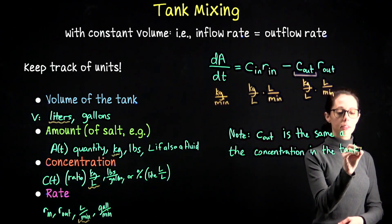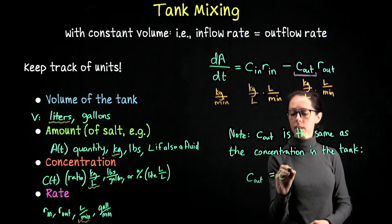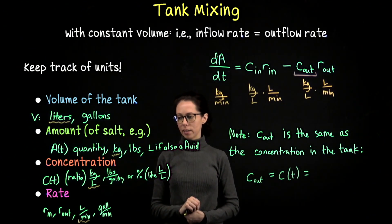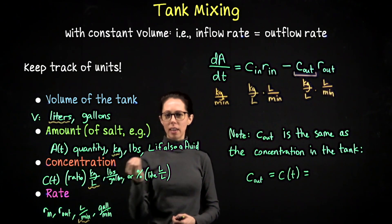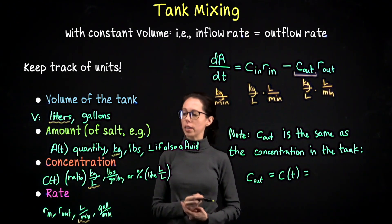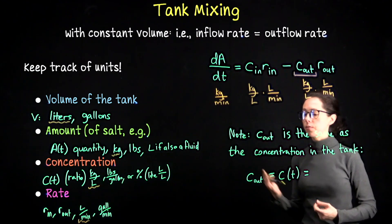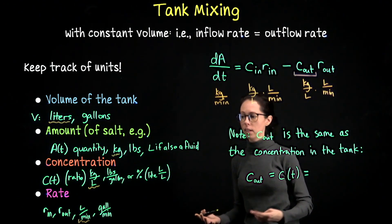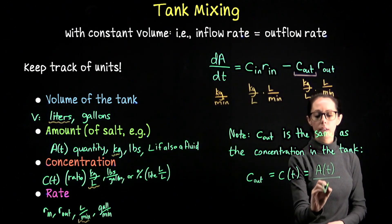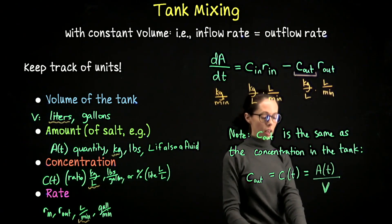So C_out equals the concentration in the tank, which is C(t). What is this concentration? It's the amount of salt — A(t) — divided by the volume of the tank. So concentration is A(t) over the volume V. For kilograms of salt in a 50-liter tank, the concentration unit is kilograms per liter: A(t) in kilograms divided by volume in liters.